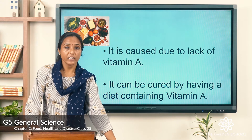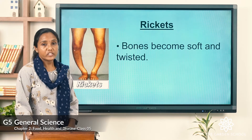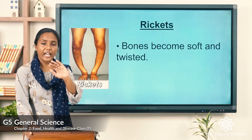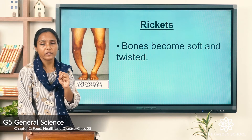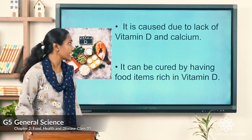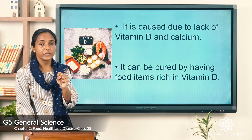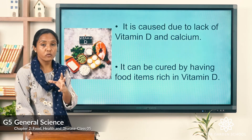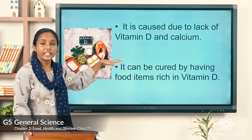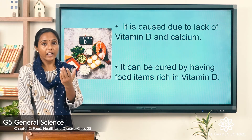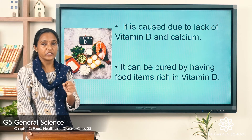The next deficiency disease is rickets. As you can see in the picture, rickets causes bones to become soft and twisted — they look curved. This is caused due to lack of vitamin D and calcium. If we do not have the correct amount of vitamin D and calcium in our body, we might suffer from rickets. It can be cured by having a diet containing vitamin D and calcium.